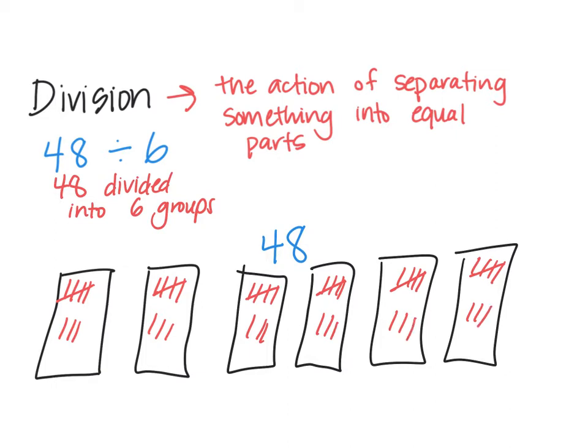So 48 divided into 6 groups means that in each group there will be 8, because this is 1, 2, 3, 4, 5, 6, 7, 8. So 8, 8, 8, 8, 8, and 8. So 48 divided into 6 groups makes groups of 8. So our answer would be 8.